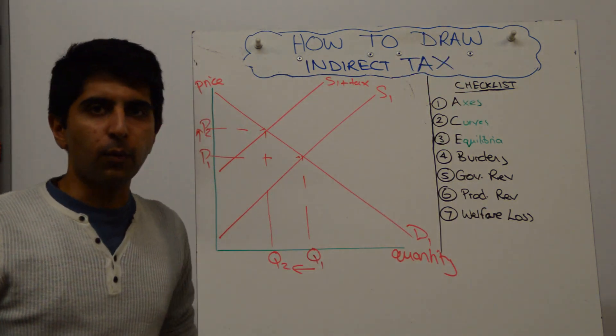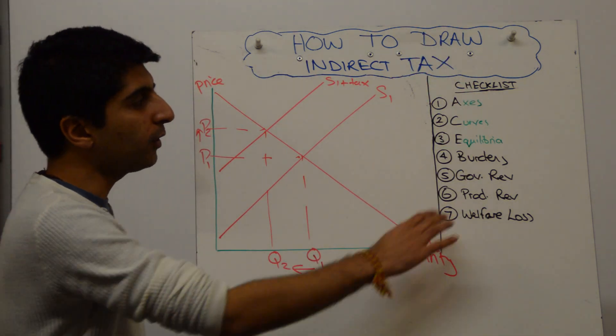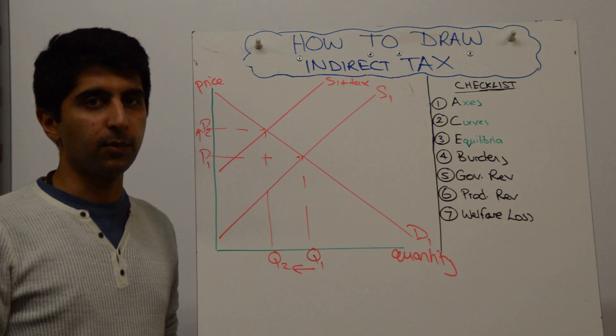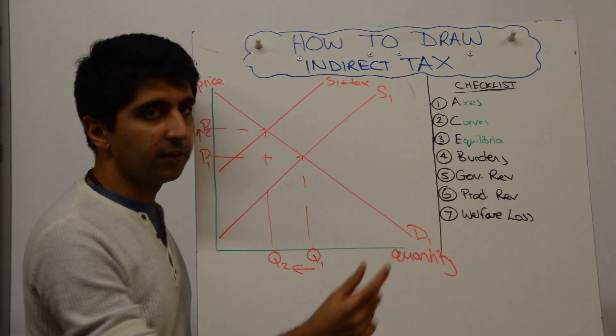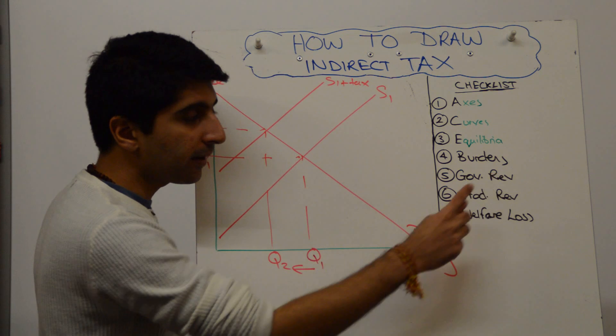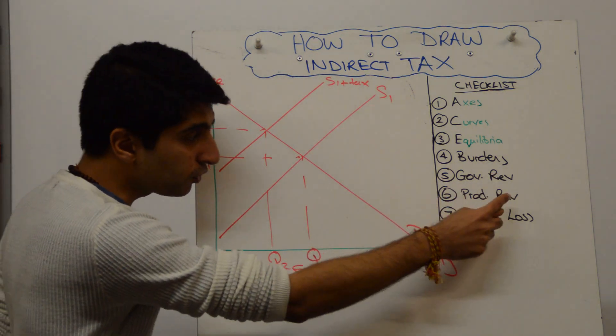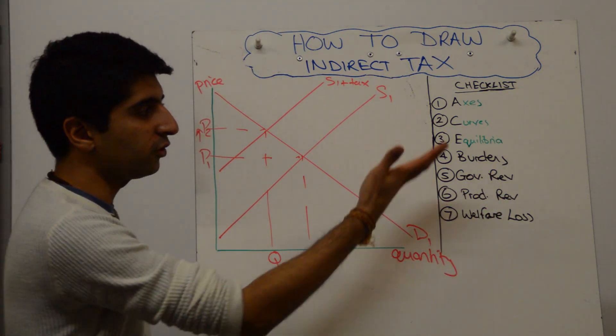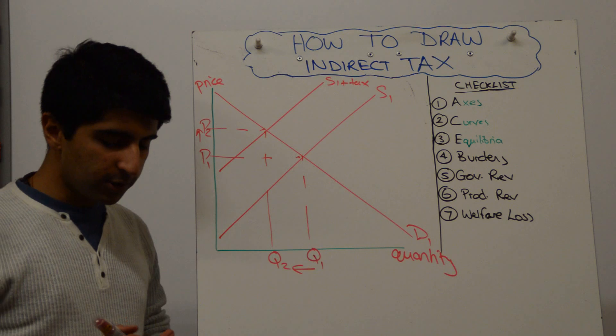Right, it's worth going to our checklist here. What are the key things that we're looking to show? We've already done the equilibria, the change in the equilibria. We want to show burdens. Consumer burden, producer burden. We want to show the government revenue. We want to show producer revenue. We want to show welfare loss. We want to show all of these key things. How do we do it?